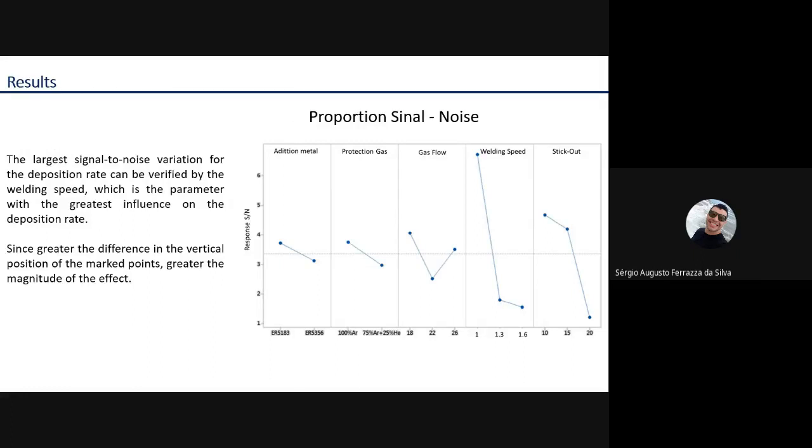Results: The largest signal-to-noise variation for the deposition rate can be verified by the welding speed, which is the parameter with the greatest influence on the deposition rate. The greater the difference in the vertical position of the marked point, the greater the magnitude of the effect. In the picture, we can see the welding speed presents the highest point in the graph and the most vertical line.